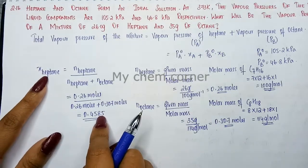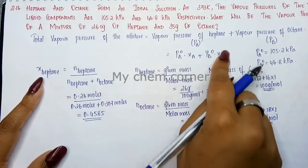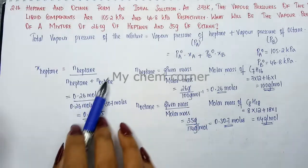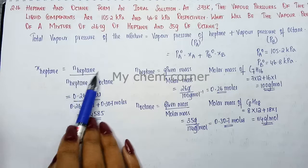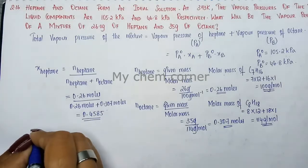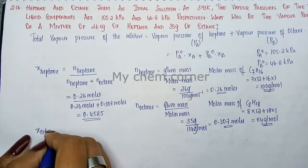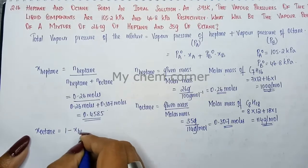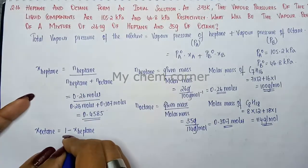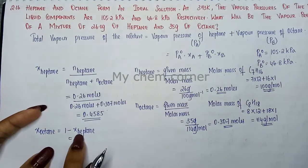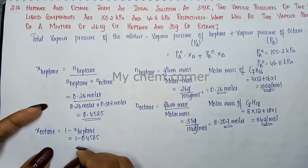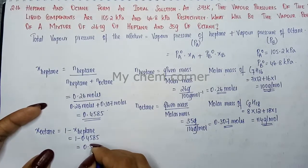For the mole fraction of octane, we can either use the formula directly or use the shortcut: X of octane equals 1 minus X of heptane. So XB equals 1 minus 0.4585, which gives 0.5414 as the mole fraction for octane.